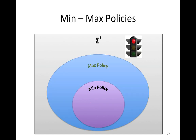The maximum policy describes the maximum set of strings that you are allowed to accept and return. Anything outside of the maximum policy is bad — it's considered to be a bad string. This is an example of a zip code maximum policy.